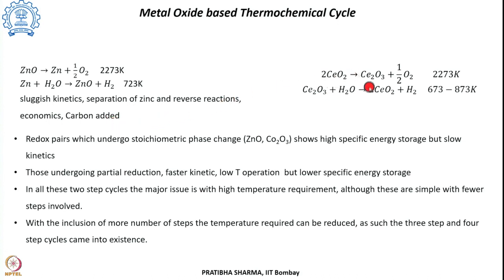In the cerium oxide-based cycle, cerium oxide undergoes a reduction reaction at 2273 Kelvin to produce Ce₂O₃ and oxygen. This Ce₂O₃ returns to its initial stage when reacting with water at 673–873 Kelvin, producing hydrogen. These representative metal oxide-based thermochemical cycles are two-step oxidation-reduction reactions, but the temperatures involved in the endothermic step are substantially high.